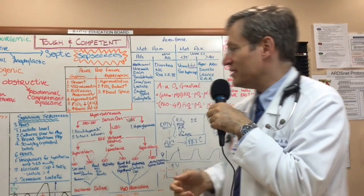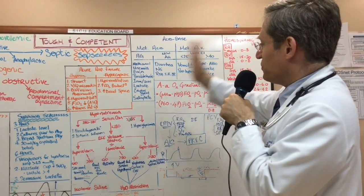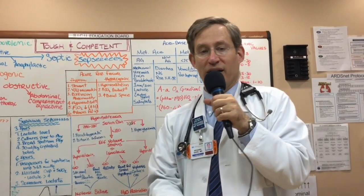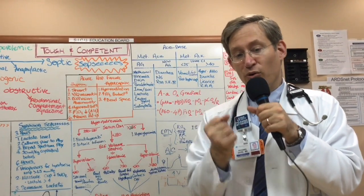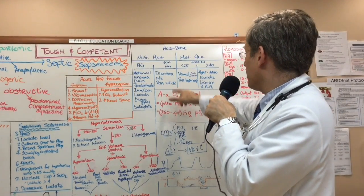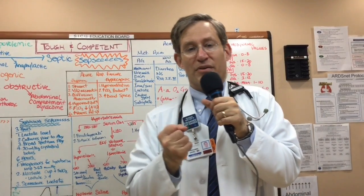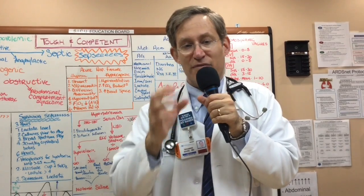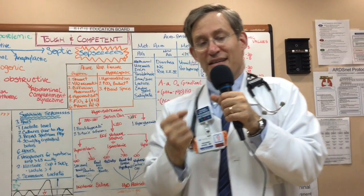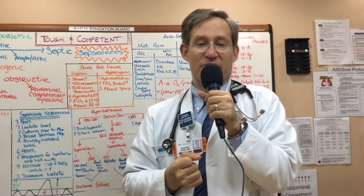There are Type 1, 2, and 4 renal tubular acidoses. Type 1 is distal. Type 2 is proximal, where the body is not reabsorbing bicarbonate. And then, importantly, the Type 4 RTA — it has taken me years to be able to get my mind around this enough to teach it.